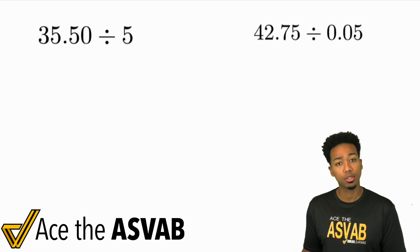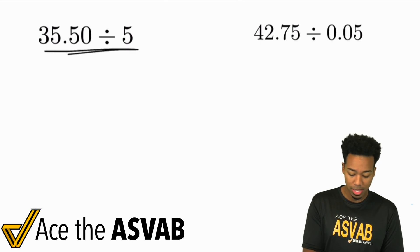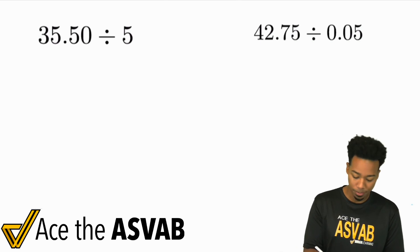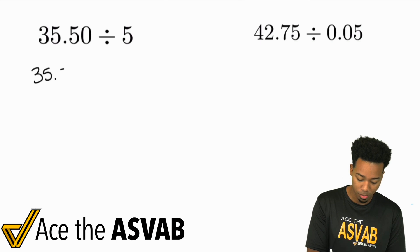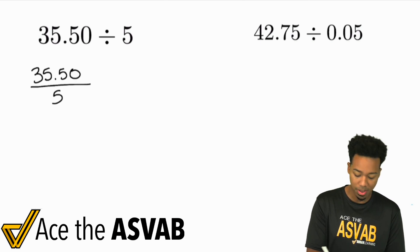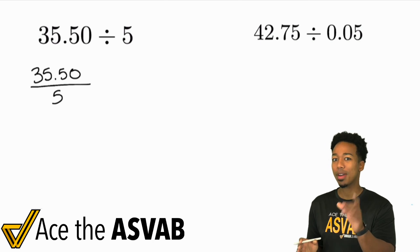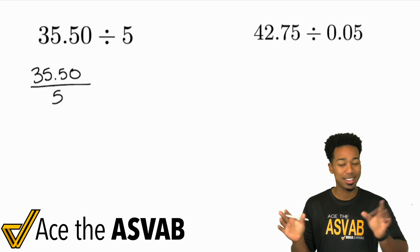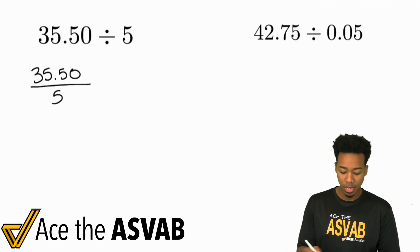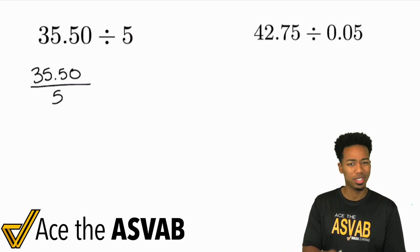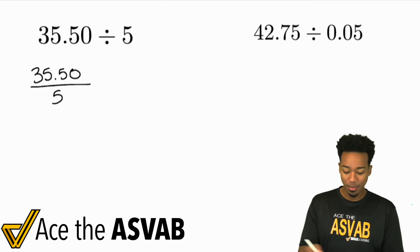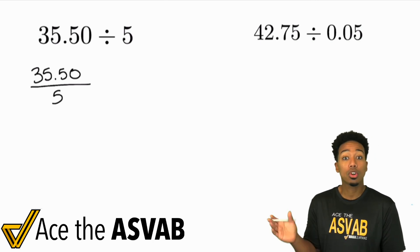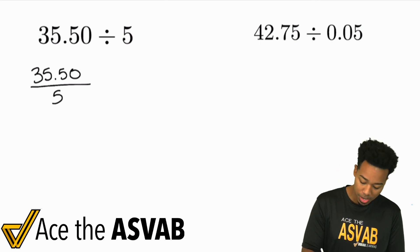So 35.50 divided by 5. Here's the thing. Remember that this is the same exact thing as writing a fraction, 35.50 divided by 5. They're the same thing. Now, this is going to come back later. Division and fractions, they're the same, but I'm going to show you why that's going to matter in a couple of moments. So in this case, this is the easier one. You can just go ahead and set up your long division nice and easy. Set up 5 going into 35.50. Just set it up just like that.